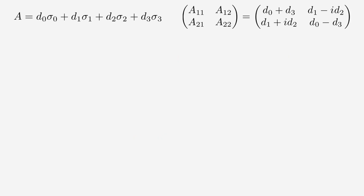We can formulate any operator acting on a two-dimensional state space as a complex 2x2 matrix. A very important family of operators within these is those associated with physical observables. We know that these observables are described by a very specific class of operators, namely by Hermitian operators. A Hermitian operator A is one that is equal to its adjoint. We're now going to explore what this implies for the matrix formulation in terms of the identity matrix and the Pauli matrices.